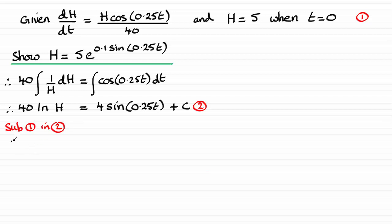So if we do that we therefore got 40 then natural log of H which is now 5 and we get 4 times the sine of 0 plus that constant of integration plus C. Well the sine of 0 is 0 so that means that we're therefore left with C equaling 40 times the natural log of 5.